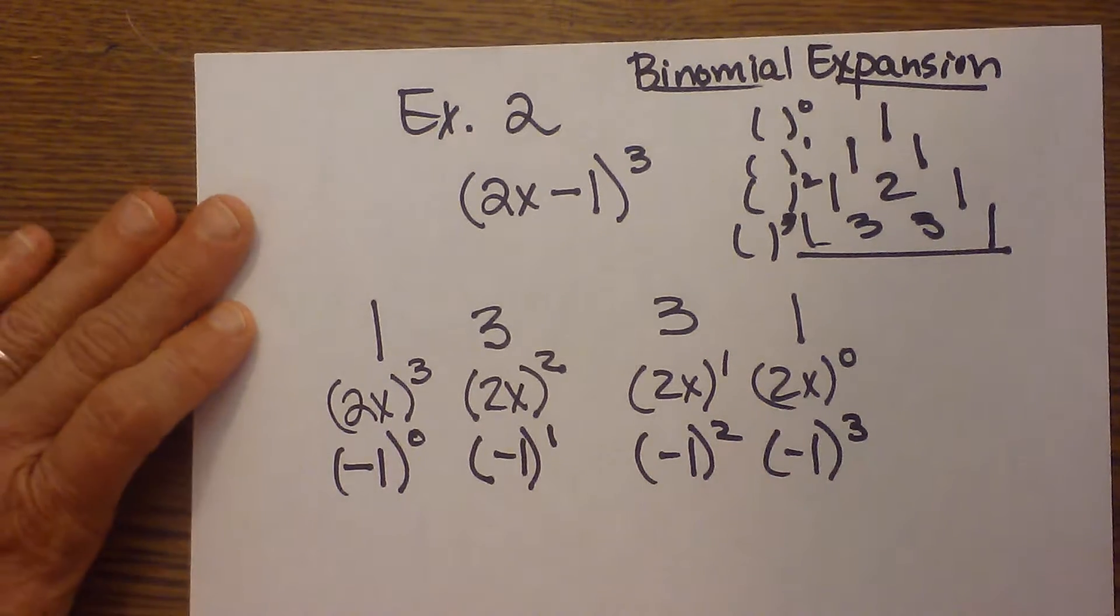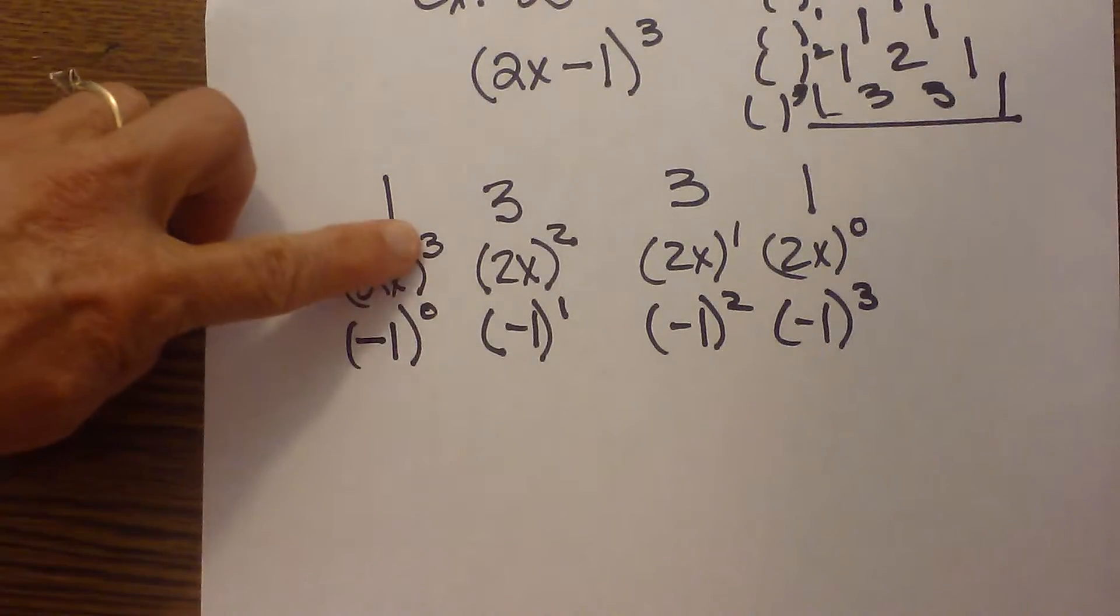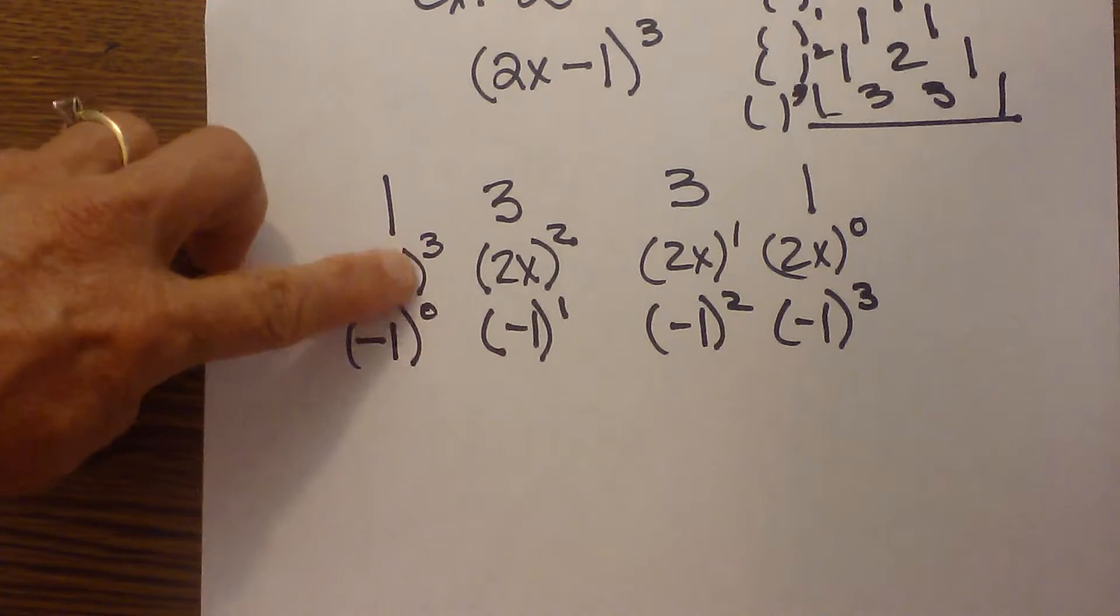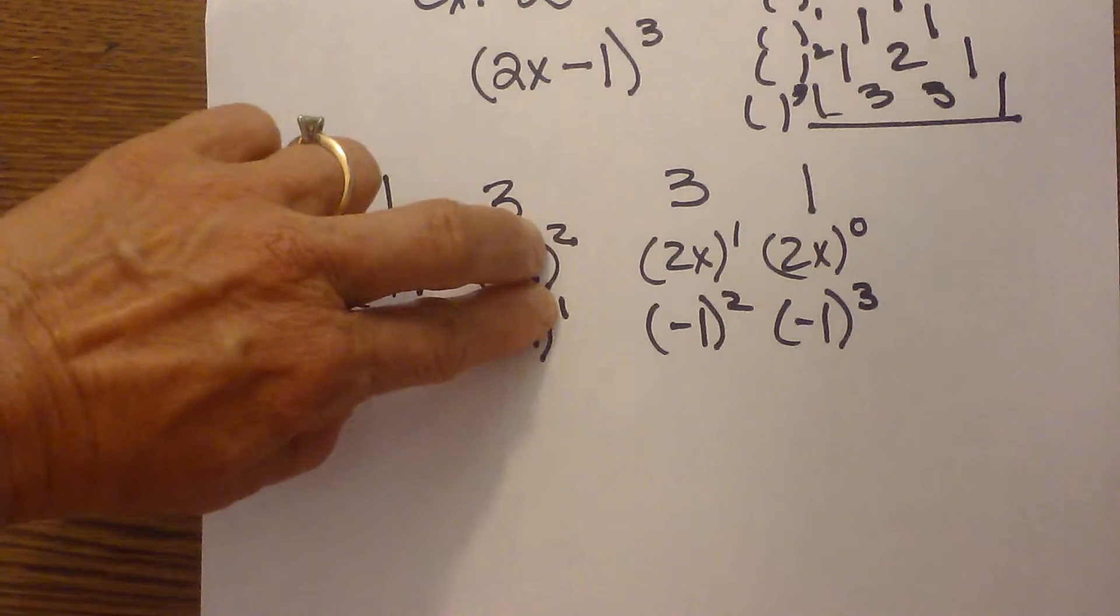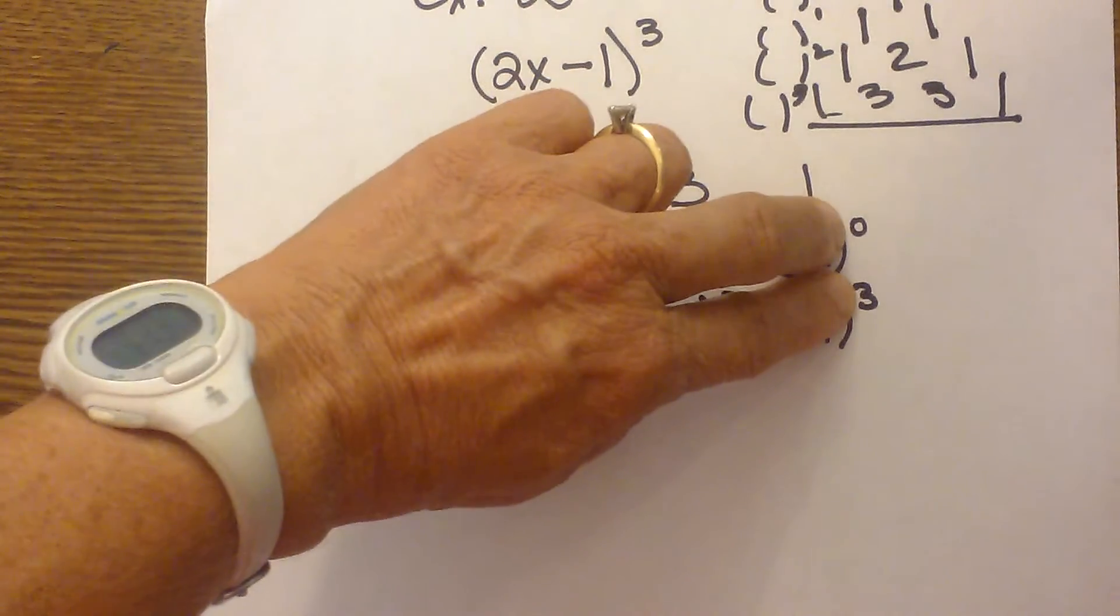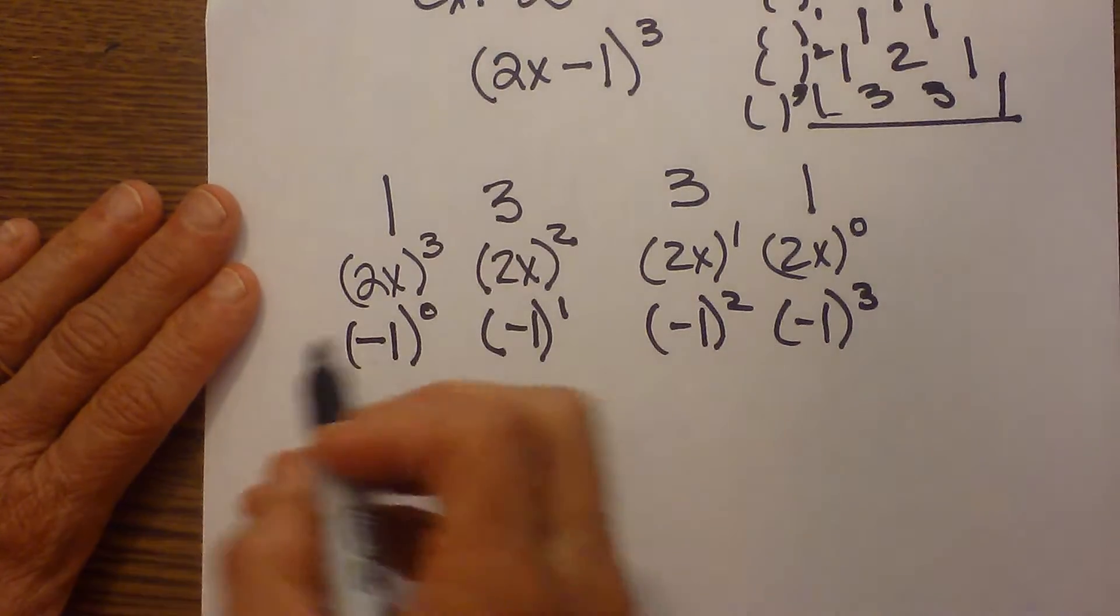Now a couple quick things about exponents I haven't talked about yet, is each term will have a sum of exponents of 3 in this one. Since we're expanding a cubic, you'll add these exponents always to 3. Just a helpful hint when you can kind of check it as you're setting it up.